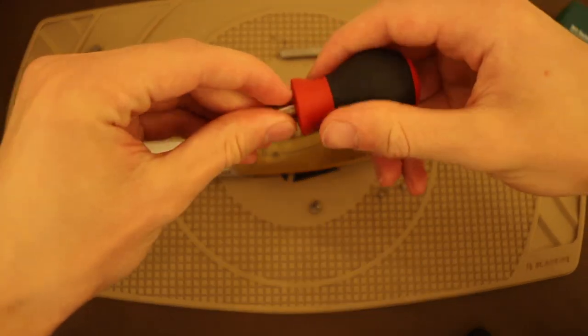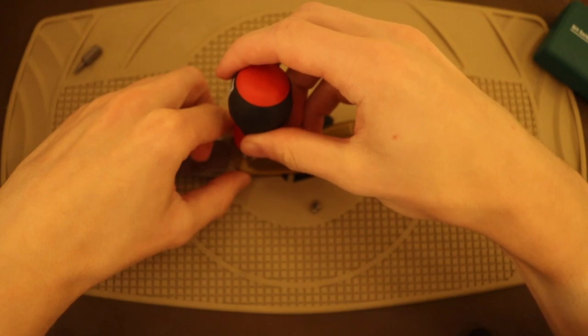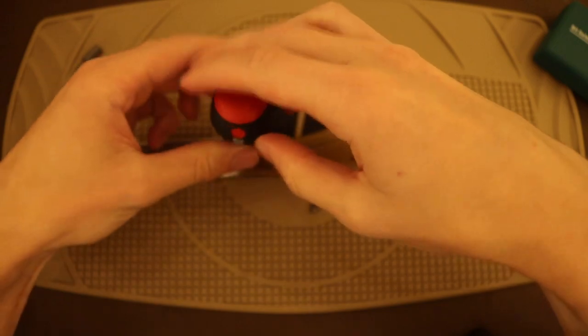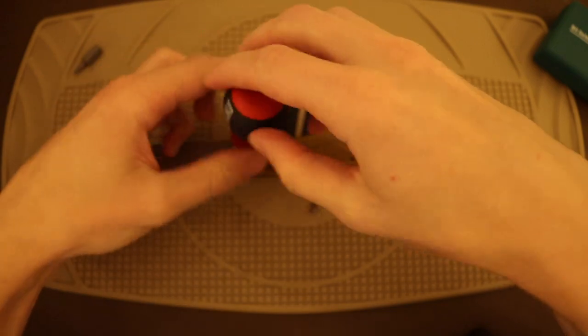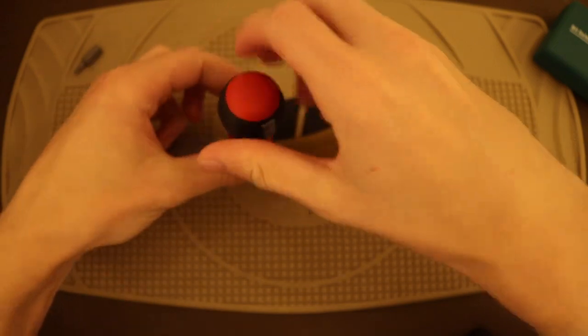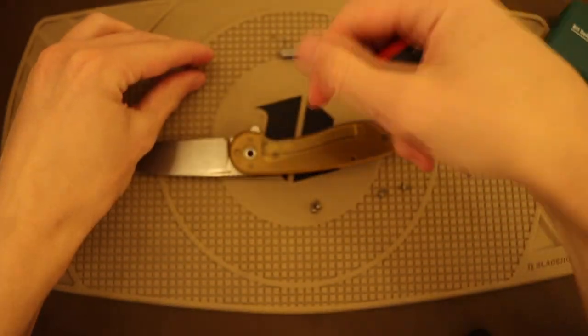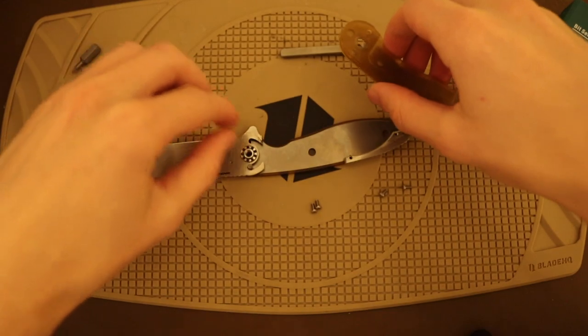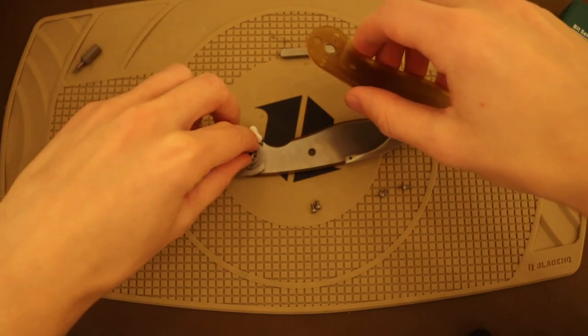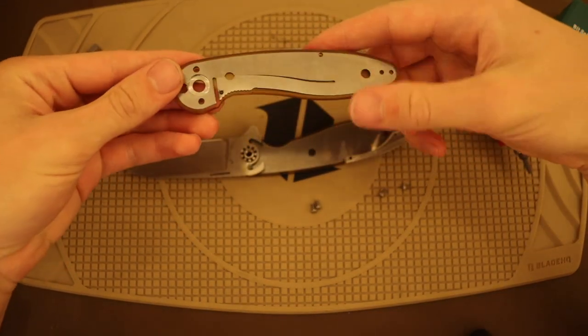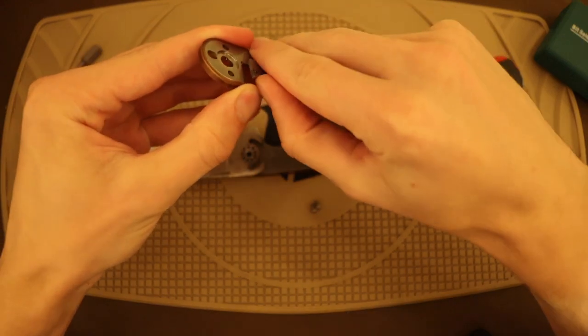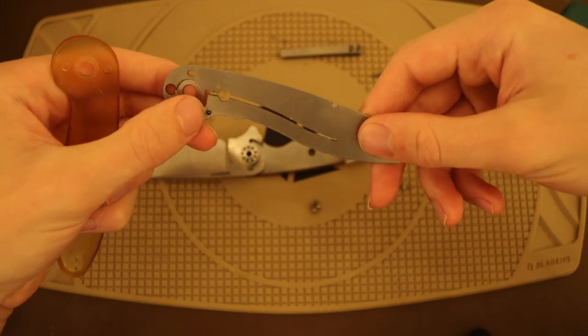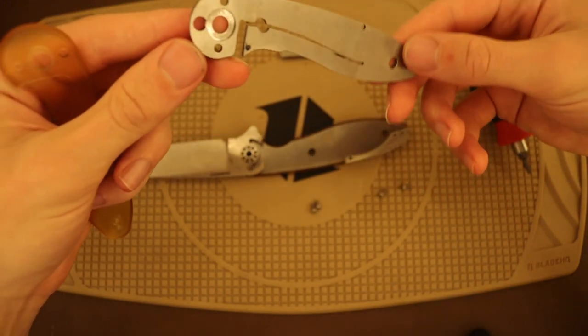Alright, so now we just got to screw this last guy off here, the pivot, and we can pretty much take this thing apart. So as you can see, definitely not too complicated. And one thing is, yeah, there we go. This is the stainless steel lock bar here, you guys can see that. Nothing too fancy, nothing too crazy. You got your little detent ball there.